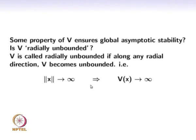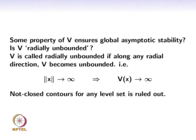Level sets of the Lyapunov function give estimates of the region of attraction, but these may be conservative. We call a Lyapunov function V radially unbounded if, whenever the norm of x becomes very large — meaning we go very far from the origin — the Lyapunov function value also becomes arbitrarily large. This property ensures that all contour sets close and are bounded, ruling out open contours for any level set.